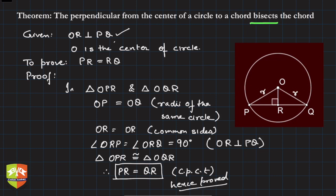What do we learn out of this theorem? A perpendicular from the center dropped onto a chord—not just any perpendicular, the perpendicular has to be dropped from the center. If you drop another perpendicular, that will not bisect the chord PQ. Only that perpendicular which is dropped from the center onto the chord will bisect the chord.